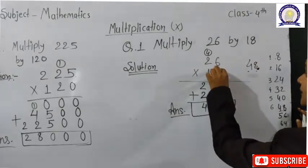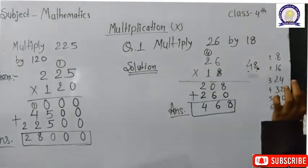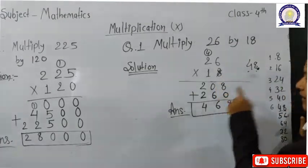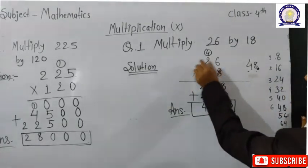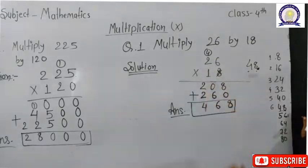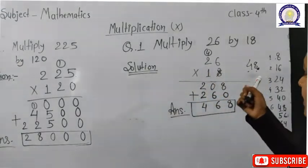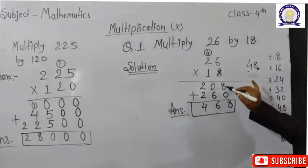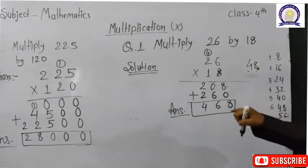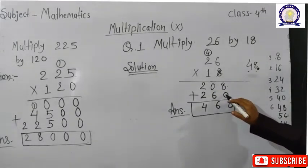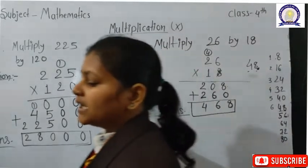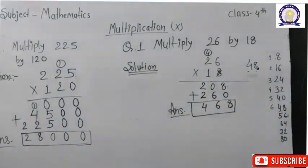Now we add the answers: 0+0=0 in ones place; 5+5=10, write 0 carry 1; 4+2=6, plus 1=7 — wait, working through: 0, 0, 5, 10→0 carry 1, 4+2=6+1=8, and 2 → answer is 27,000. This is your answer.